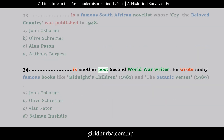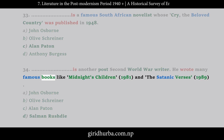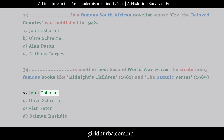Question 34: Who is another post-Second World War writer who wrote many famous books like Midnight's Children (1981) and The Satanic Verses (1989)? A. John Osborne. B. Olive Schreiner. C. Alan Paton. D. Salman Rushdie.